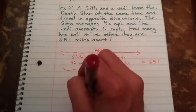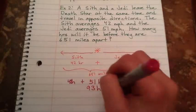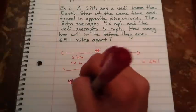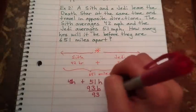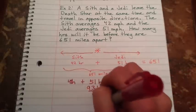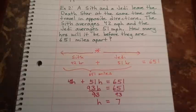You get 93H equals 651. Because you're just combining your like terms there. Divide both sides by 93. And you have your hours equals 7 or your time.